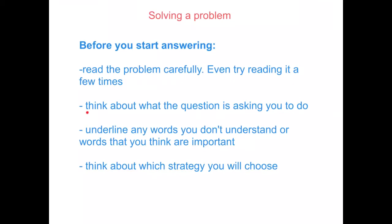Think about what the question's asking you to do. What is it asking you to do? Is it asking you to find the total amount? Is it asking you to find out an order of something, or how many there are altogether? Or do you have to divide it, subtract it, or plus it? Have a think about what it's asking you to do. The next thing you can do is underline words that you don't understand. If you don't understand a word or don't know what it means, underline it and try to figure that out. Also underline words that are important — so if it has the words 'all together', you would underline that because you know it probably means you're going to plus them together.